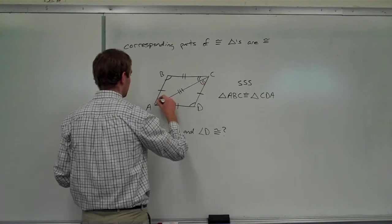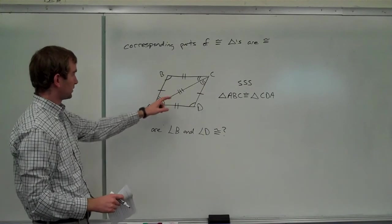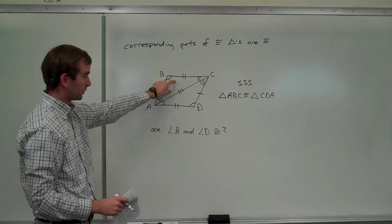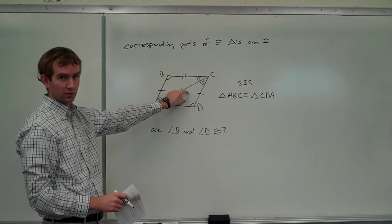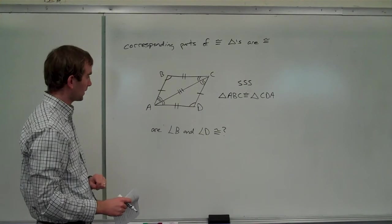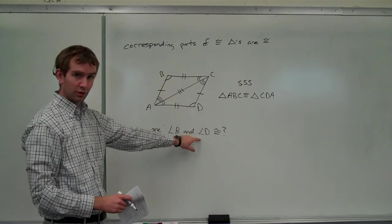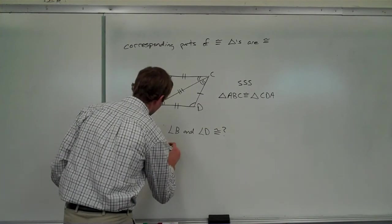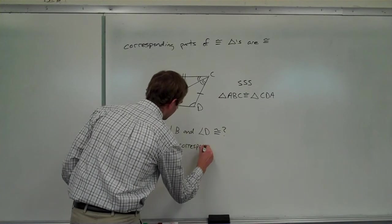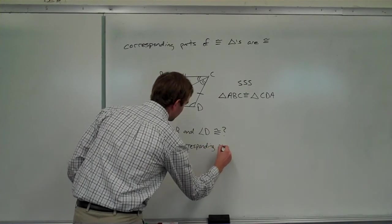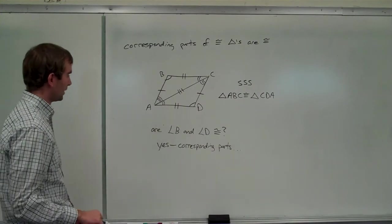So, again, all six pieces of information, all sides and angles, right? Three sides and three angles of one have to be congruent to the corresponding three sides and three angles of the other. So, yes, angle B and angle D are congruent because the corresponding parts are congruent.